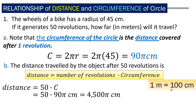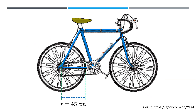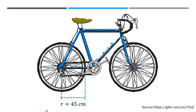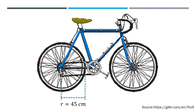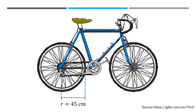We know that 1 meter is equal to 100 centimeters. So we divide 4,500π centimeters by 100 centimeters to get the number of meters, and that is approximately 141.37 meters. So this is how we illustrate it: the radius of the wheel of the bike is 45 centimeters, and you keep on rotating to have 50 revolutions, so you are traveling a particular distance.